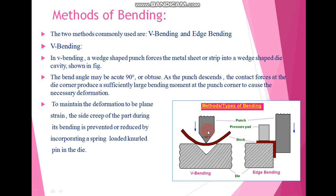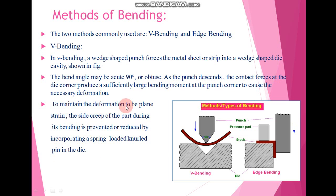During bending, the bend angle may be acute or it may be obtuse. As the punch descends and applies the force in a downward direction, the contact forces at the die corner produce a sufficiently large bending moment at the punch corner, which will cause the necessary deformation, and we get the required bending operation. To maintain the deformation to plane strain, the side slip of the part during bending is prevented by a spring-loaded nerve pin in the die.